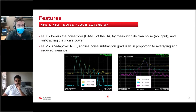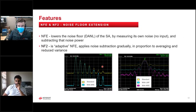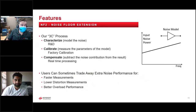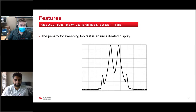The DANL is the measurement of the noise floor. Some of our spectrum analyzers have a feature called noise floor extension, which is an adaptive digital signal processing feature that allows the noise floor to actually be subtracted down even lower. That's a good one for a demo if we have time.